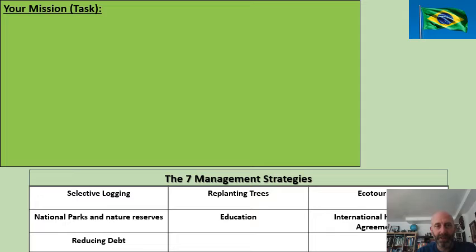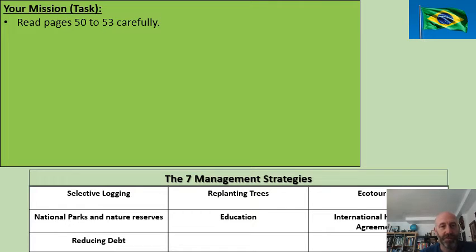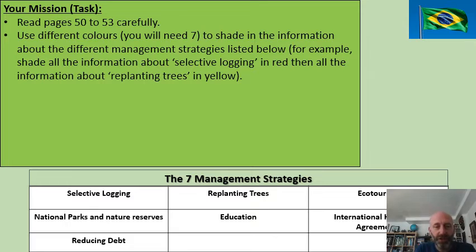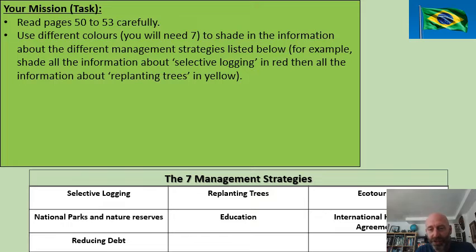The main activity during this lesson is to use the information on pages 51, 52, and 53. I want you to carefully read through that, and then you're going to need seven colours — pencil crayons or seven different highlighters. I want you to shade each of the strategies mentioned: selective logging, replanting trees, ecotourism, national parks, education, international hardwood agreements, and reducing debt. Wherever each strategy is discussed in the text, highlight that information in its own colour. For example, wherever it says selective logging, highlight it one colour, then move on and highlight replanting trees in a different colour.